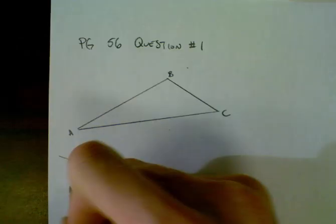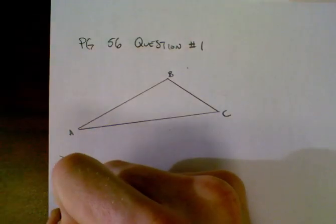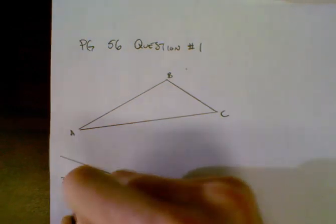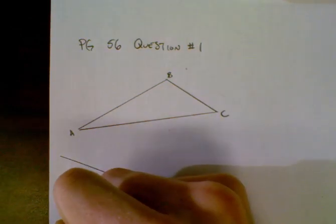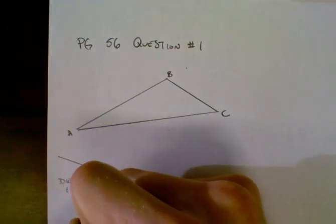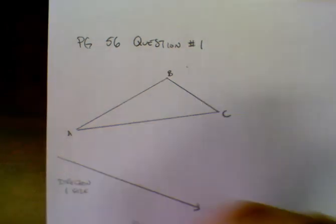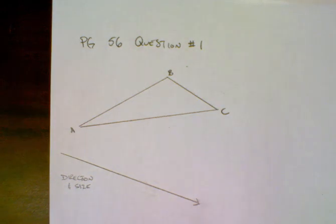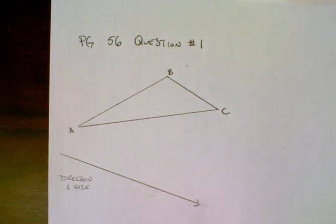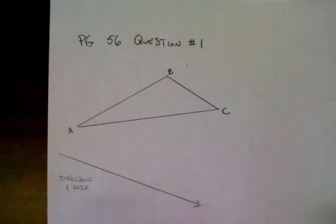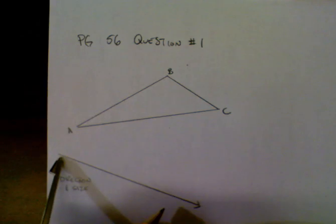We're going to translate a geometric figure — in this case a triangle — by being given an arrow which shows us the direction and the distance that we have to translate it. The arrow tells us the direction and the size of the translation. That's important because we need to know not only how far we have to move it, but also in what direction.